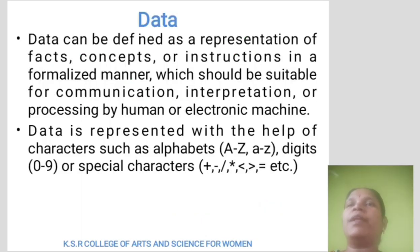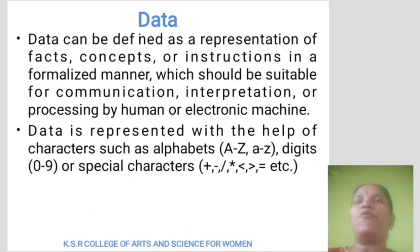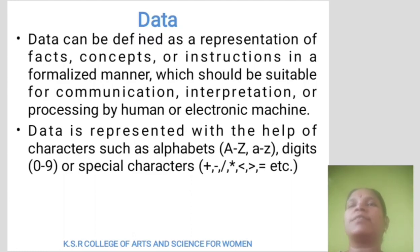First, Data. Data can be defined as a representation of fact, concept or instruction in a formalized manner, which should be suitable for communication, interpretation or processing by the human or electronic machine. Data is represented with the help of characters such as alphabets — capital A to Z, small a to z, digits 0 to 9, or special characters like plus, minus, slash, less than, greater than, equal to, etc.